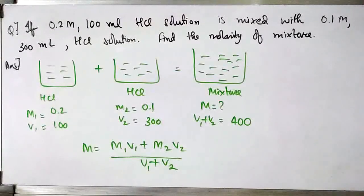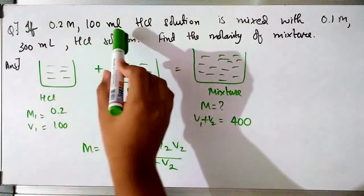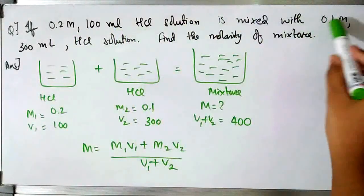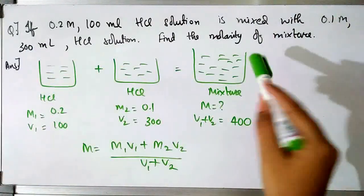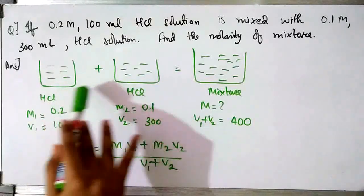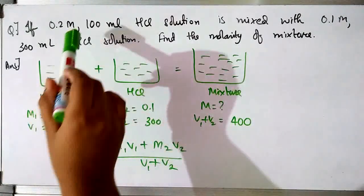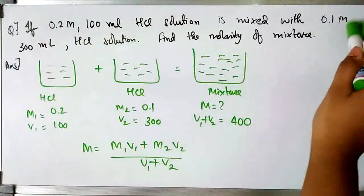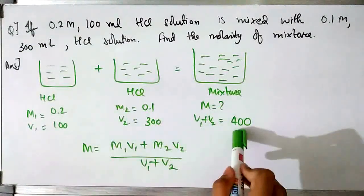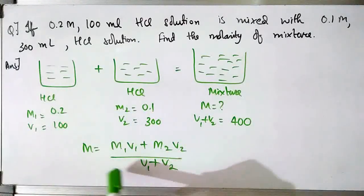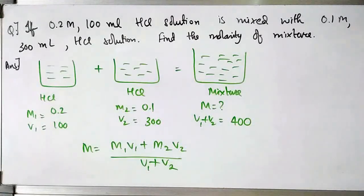Here is a question on molarity of mixtures: a 0.2M, 100ml HCl solution is mixed with a 0.1M, 300ml HCl solution. We have to find the molarity of the mixture. M₁ = 0.2, V₁ = 100; M₂ = 0.1, V₂ = 300; total volume = 400ml. Use the formula M = (M₁V₁ + M₂V₂) / (V₁ + V₂) and comment your answer in the comment section.